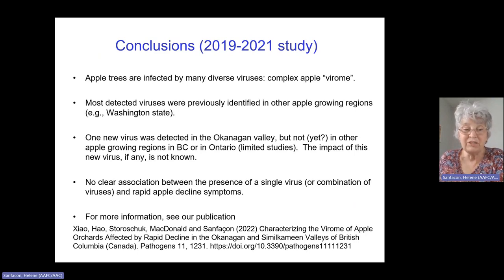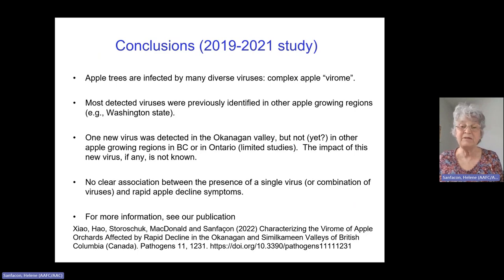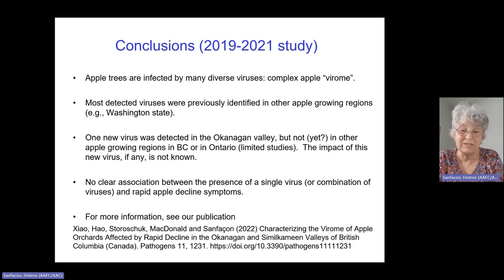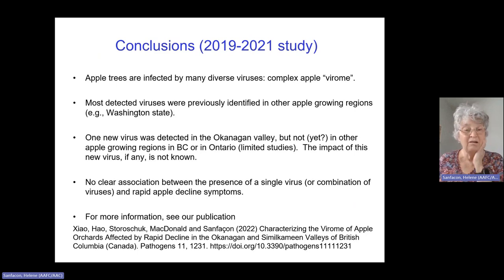There was no clear association between the presence of a single virus or a combination of viruses and rapid apple decline symptoms. That means that whether the tree looked healthy or had severe symptoms, we found essentially the same types of viruses. This does not mean that viruses do not contribute to the disease — they might contribute to disease severity, but we need to do more work to figure this out. All this work has been published, and if you want more detail, you can see our publication.